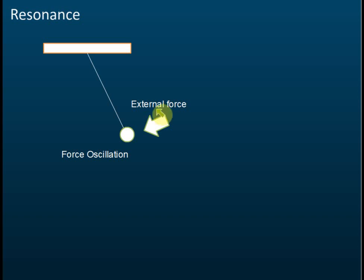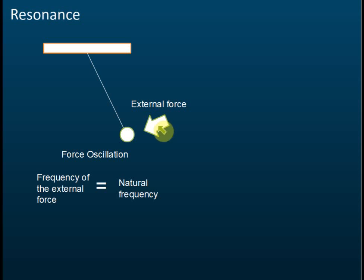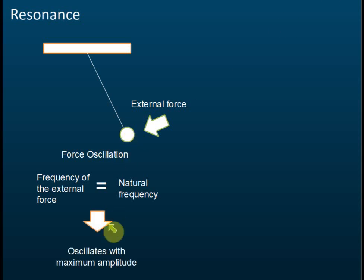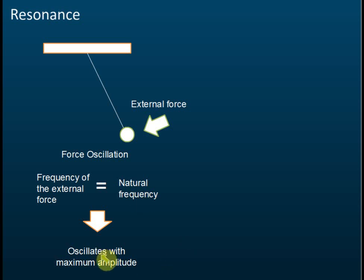What is resonance? If we have an oscillating system and an external force is given to it, that's called forced oscillations. Now if the external force has a frequency, and the frequency of the external force is equal to the natural frequency of the pendulums, then what will happen is that the pendulums will oscillate with maximum amplitude.